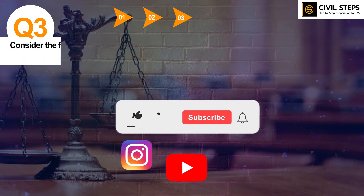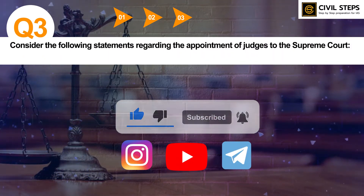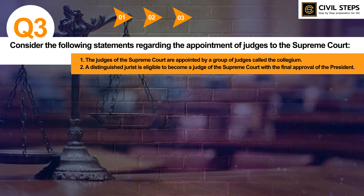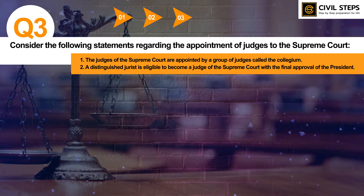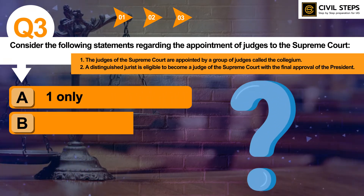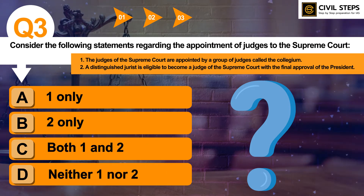Let us discuss question number 3. Consider the following statements regarding the appointment of judges to the Supreme Court. First, the judges of the Supreme Court are appointed by a group of judges called the Collegium. Second, a Distinguished Jurist is eligible to become a Judge of the Supreme Court with the final approval of the President. Which of the above statements is or are correct? Option A: 1 only. B: 2 only. C: both 1 and 2. D: neither 1 nor 2.